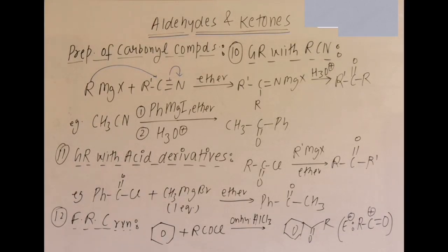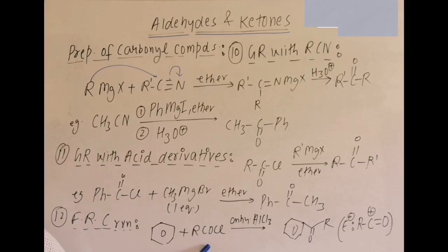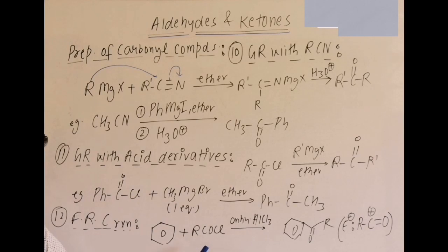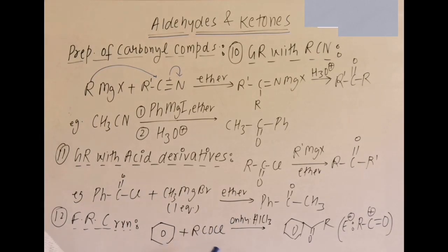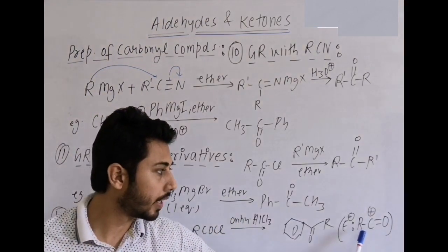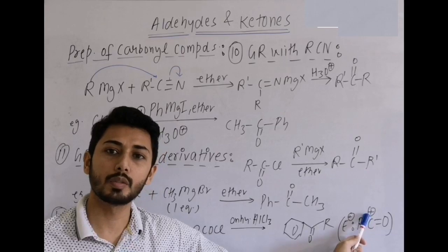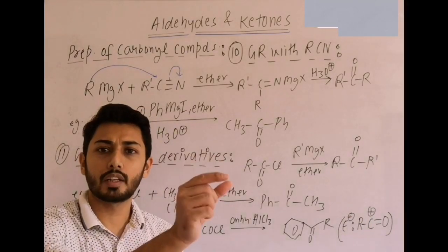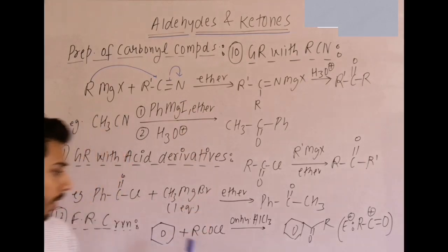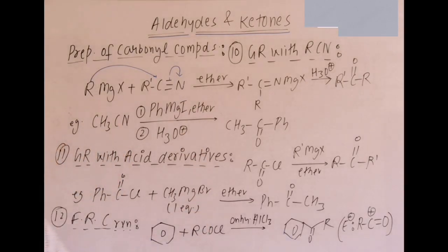Next: Friedel-Crafts acylation — covered in the alkanes/arenes topic. RCOCl or acid anhydride with anhydrous AlCl3 generates the acylium ion (R-C≡O+), which undergoes electrophilic aromatic substitution on the benzene ring to give a ketone. These are the preparation reactions of carbonyl compounds.